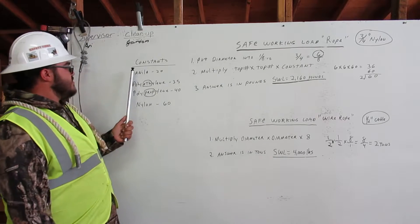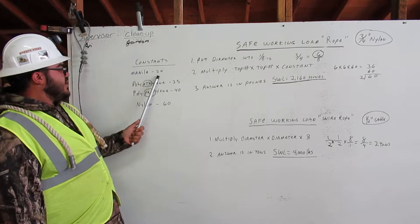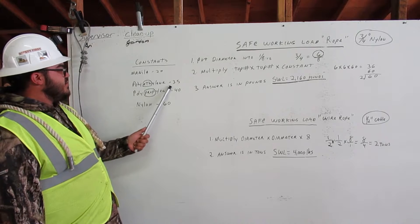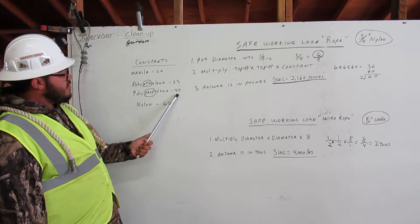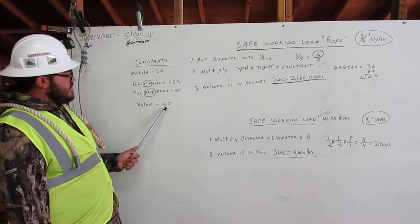Next we will multiply top number times top number times constant. Here we have four constants. Manila, 20. Polyethylene, 35. Polypropylene, 40. And nylon, 60.